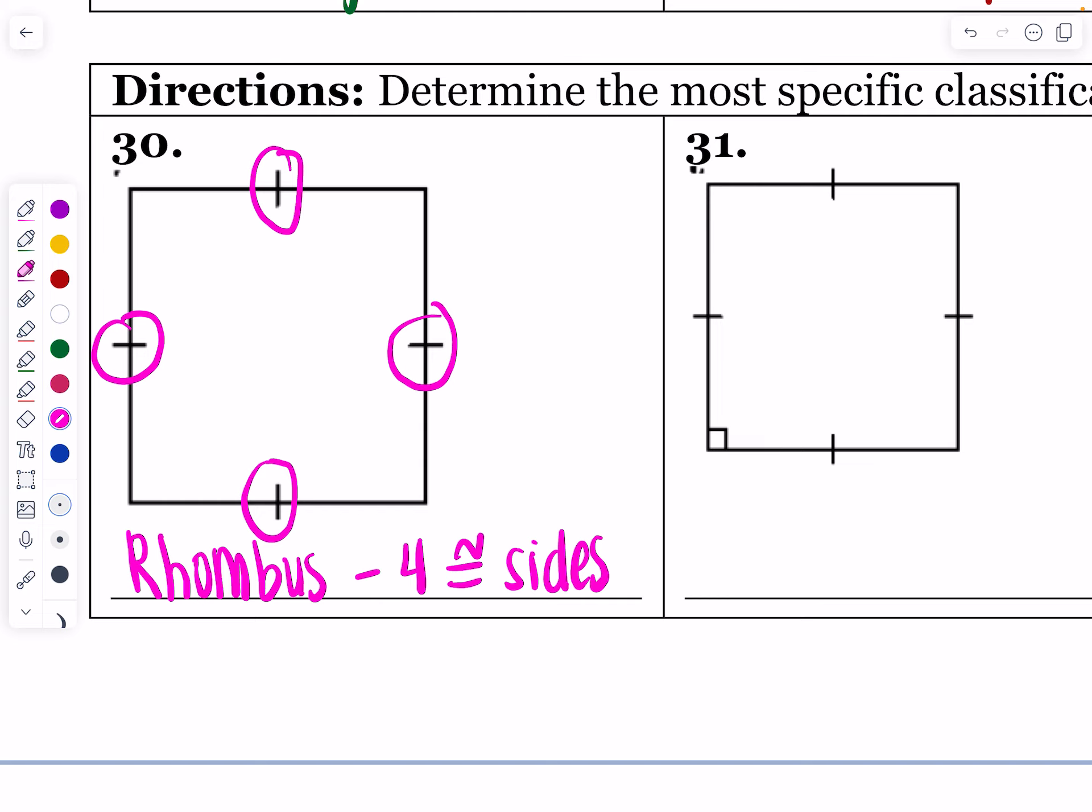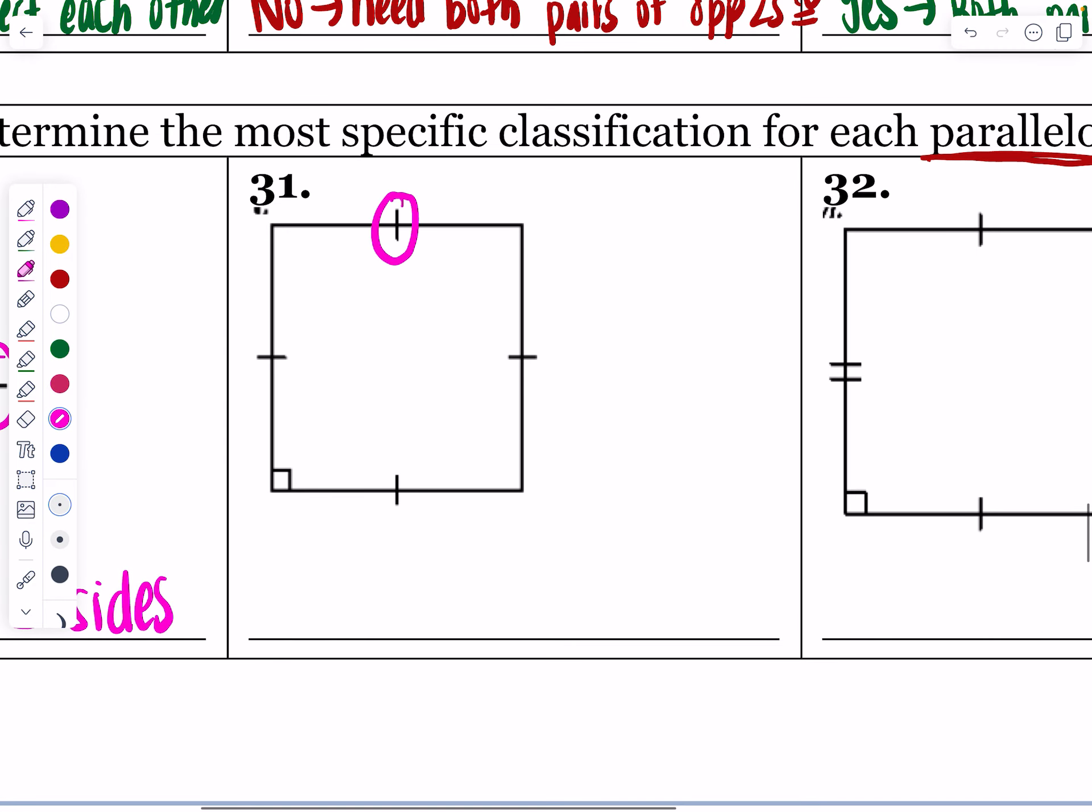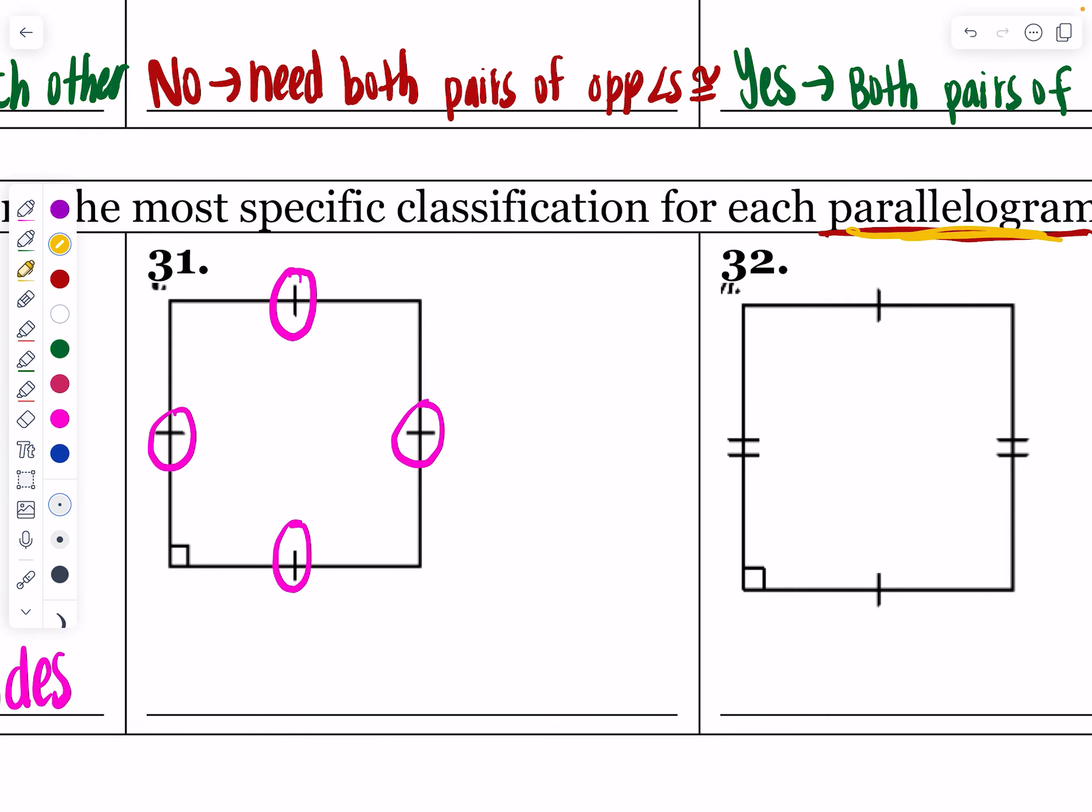31 has four congruent sides again, but it also contains a right angle. Because it's a parallelogram, we know that I can copy opposite angles congruent, consecutive angles supplementary. So I end up getting to add all of those. What we get to say on this one is that this is a square.